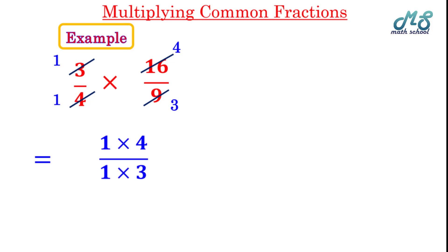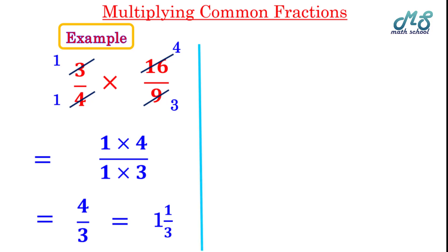Now multiply the remaining factors: 1 times 4 over 1 times 3, which gives us 4 over 3. 4 over 3 is an improper fraction, so write it as a mixed number using division: 4 divided by 3 equals 1 with a remainder of 1, so the result is 1 and 1 over 3.